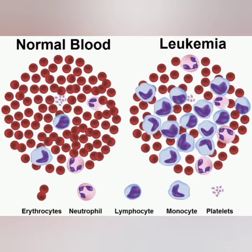CML can be diagnosed through a blood test, mainly the complete blood count (CBC) test. Through the CBC test it is possible to identify whether a person is suffering from CML. The CBC test is done by many people as part of their regular medical checkups. The normal WBC range is 4,000 to 11,000 per microliter.